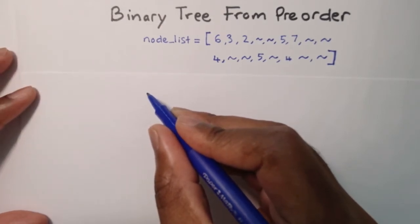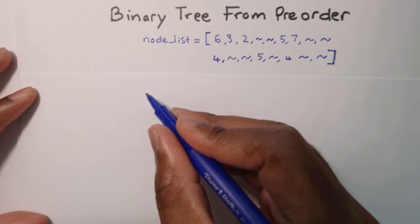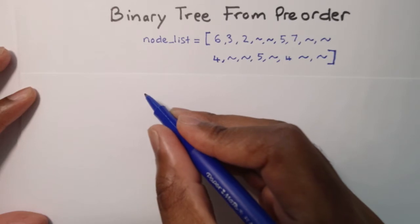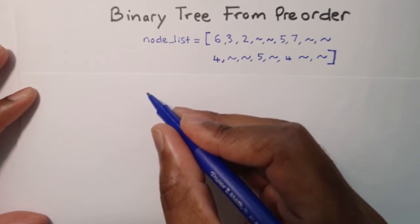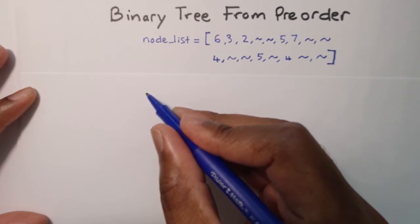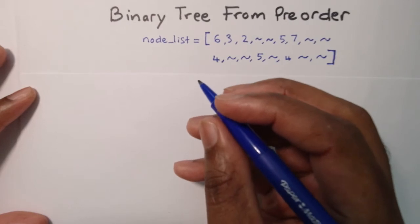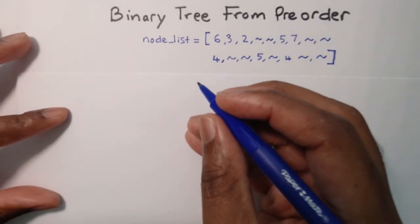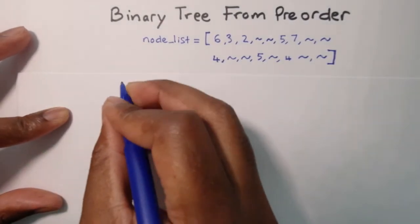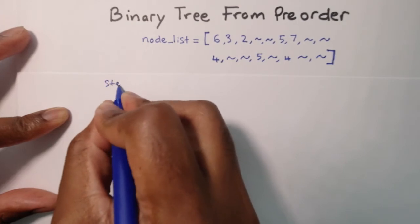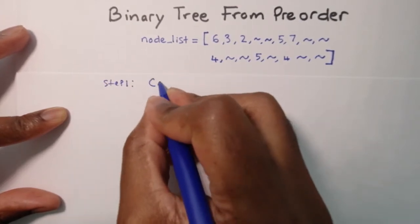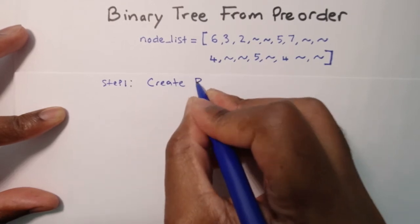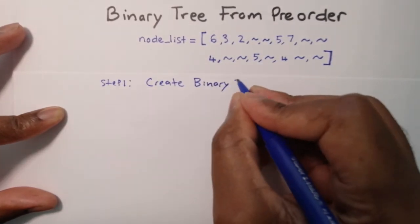Now that we've done this by hand, the next process is to create a series of steps to do this via code. This can be broken down into three steps: the first is to create a binary tree node, the second is to create a binary tree, and the third is to define a method that builds the tree.